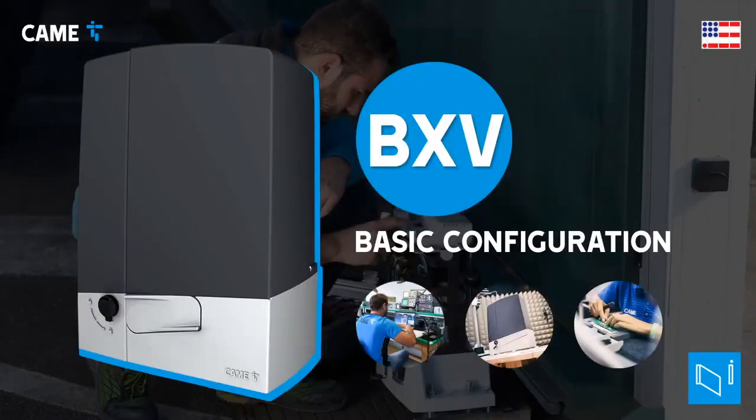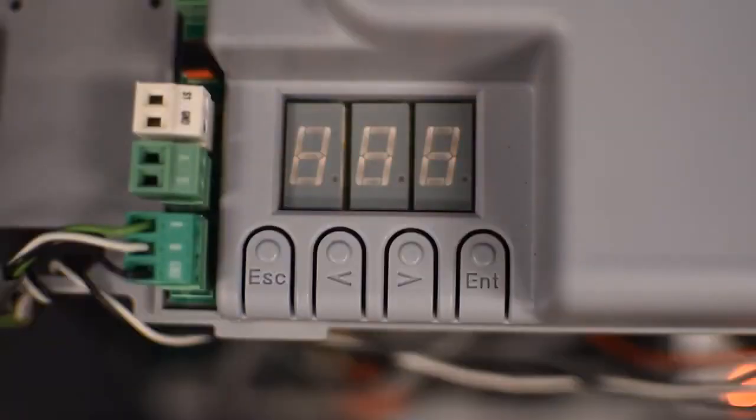In this video, we're going through the basic configuration of a CAME BXV operator. When you first power the operator, you'll see these lines blinking in the display, indicating that we haven't calibrated the encoder yet. But before doing that, you need to select the type of motor that you have.